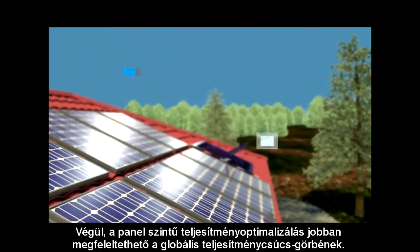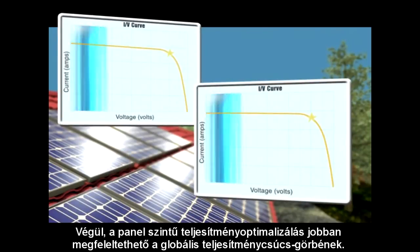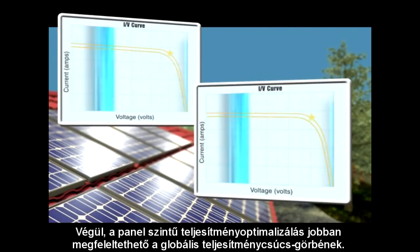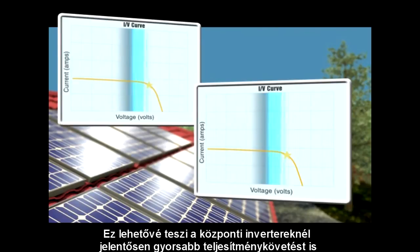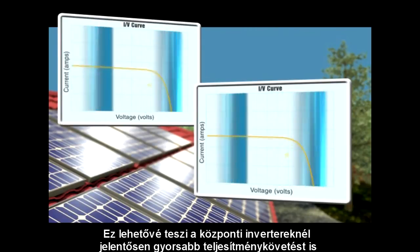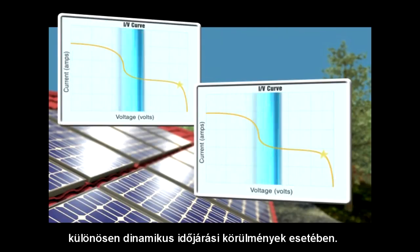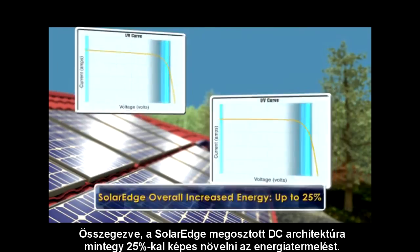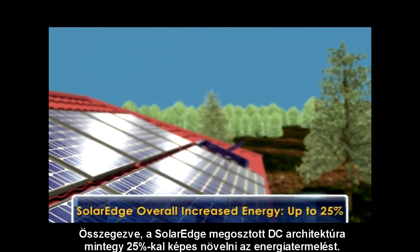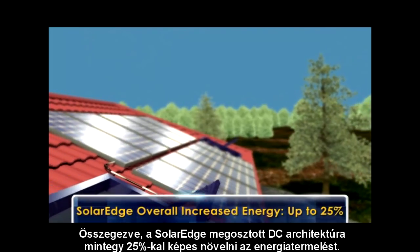Panel-level MPP tracking can better identify the global peak of the power curve. It also allows for noticeably faster tracking compared to centralized inverters, especially during dynamic weather conditions. To summarize, SolarEdge distributed DC architecture can increase energy production by up to 25%.